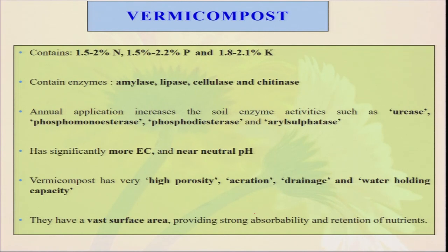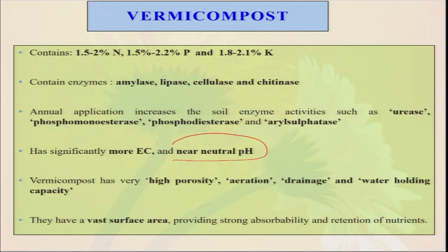Vermicompost contains 1.5 to 2 percent nitrogen, 1.5 to 2.2 percent phosphorus, and potassium. It also contains certain enzymes like amylase, lipase, cellulase, and chitinase. The soil enzymatic activities like urease, phosphatase, and phosphodiesterase are significantly enhanced. Vermicompost has a near-neutral pH — just like our compost. Applying 2 to 5 tons of vermicompost over the years helps enhance soil pH in acidic soils and reduces soil pH in alkaline soils, making the soil near-neutral condition. In near-neutral conditions, most plant nutrients become available, and when plant nutrients are available the plant can easily uptake them, resulting in better growth and yield.